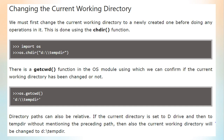Next, let's look at how to change the current working directory using the OS module. After importing the OS module, we can use the chdir command for changing the current working directory. Here, chdir is the function and tempdir is the current directory passed as an argument. There is also the getcwd function in the OS module, which we can use to confirm if the current working directory has been changed or not.